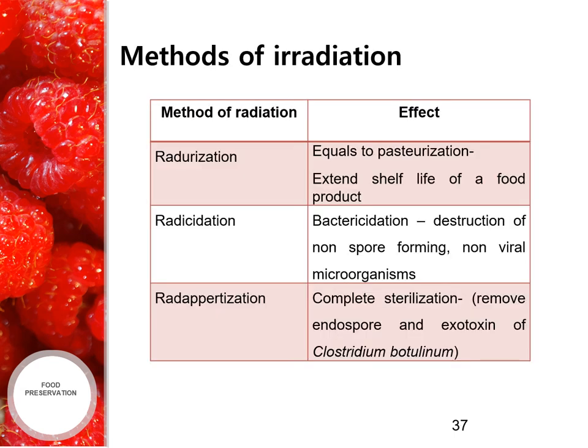The methods of irradiation: the first is radurization, which is equivalent to pasteurization and extends the shelf life of a food product. The second method is radicidation — bactericidal destruction of non-spore-forming, non-viral microorganisms. The third method is radappertization — complete sterilization, removing endospores and exotoxins produced by Clostridium botulinum.